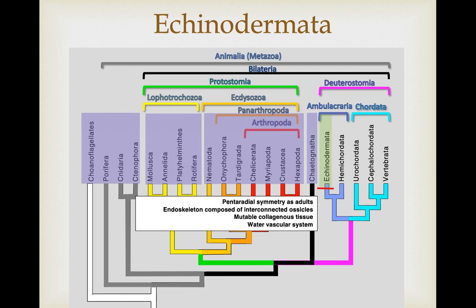Some of the synapomorphies for the group include pentaradial symmetry as adults, but they do have bilaterally symmetrical larvae. They have an endoskeleton composed of interconnected plates called ossicles. They have a well-developed muscular system, but they can also conserve muscular strength by using what is called mutable collagenous tissue. They also have a very unique structure used for foraging and locomotion called the water vascular system.